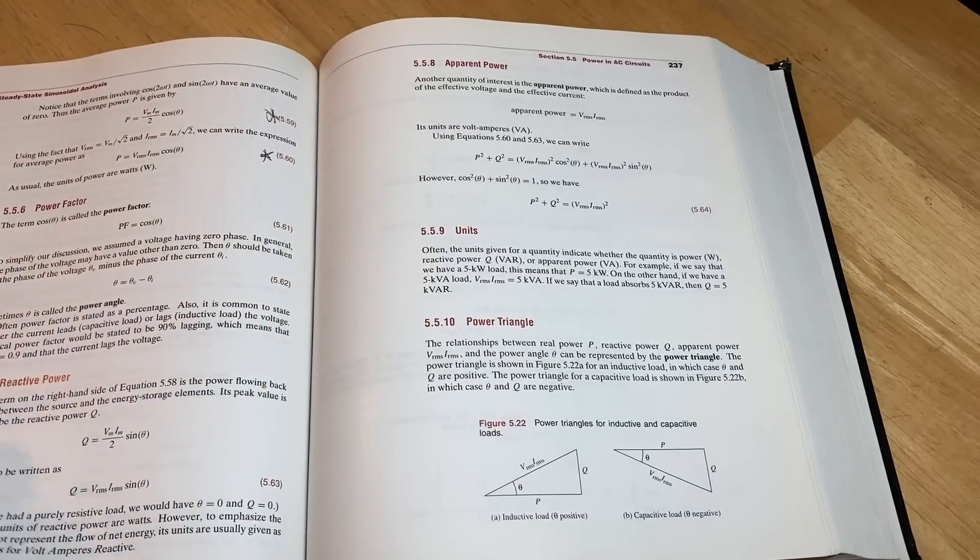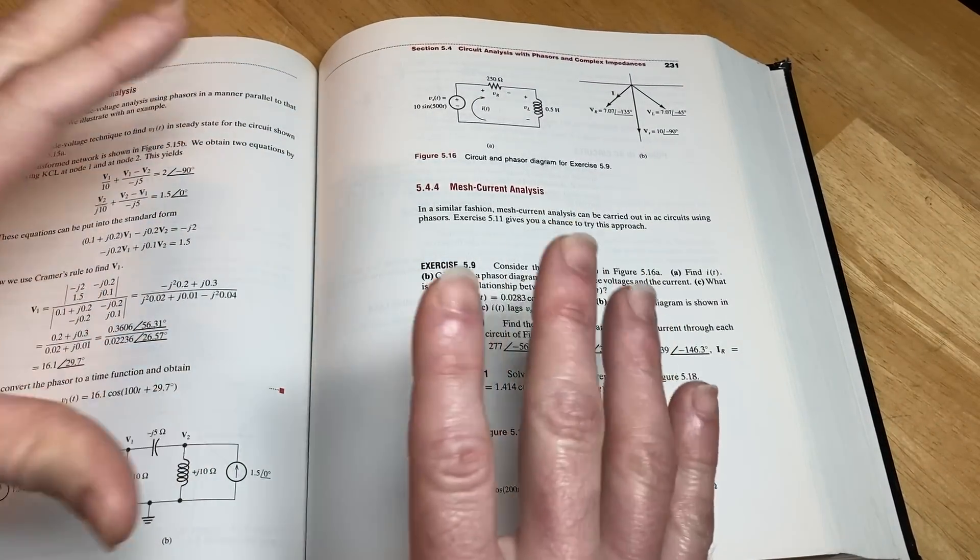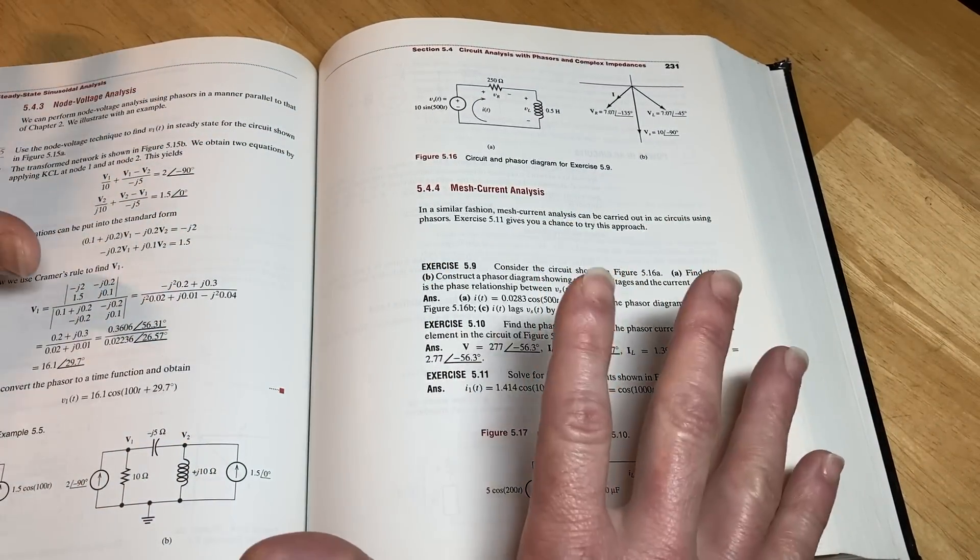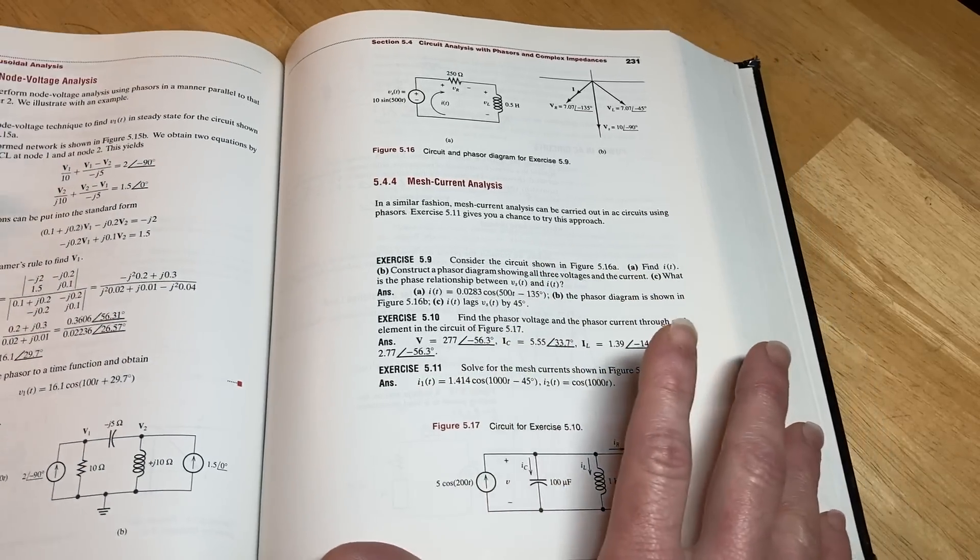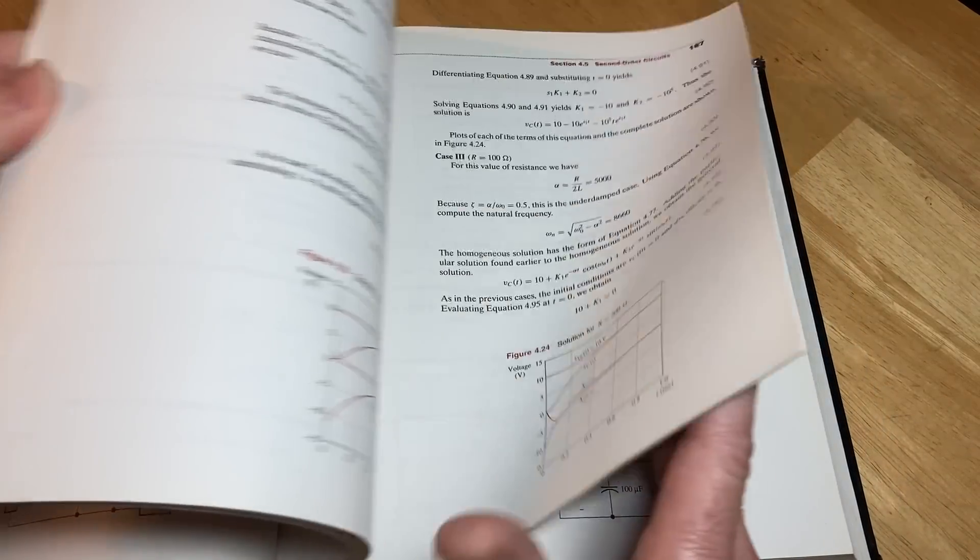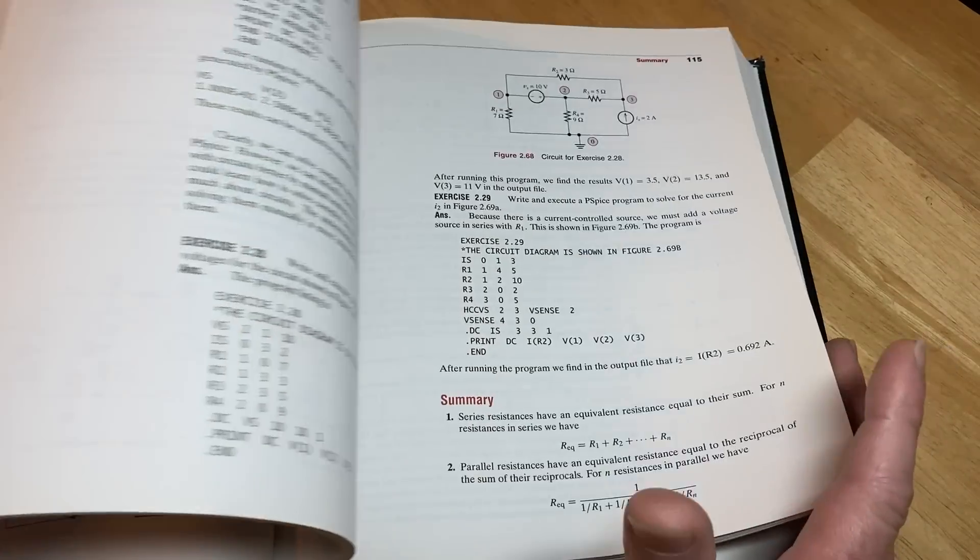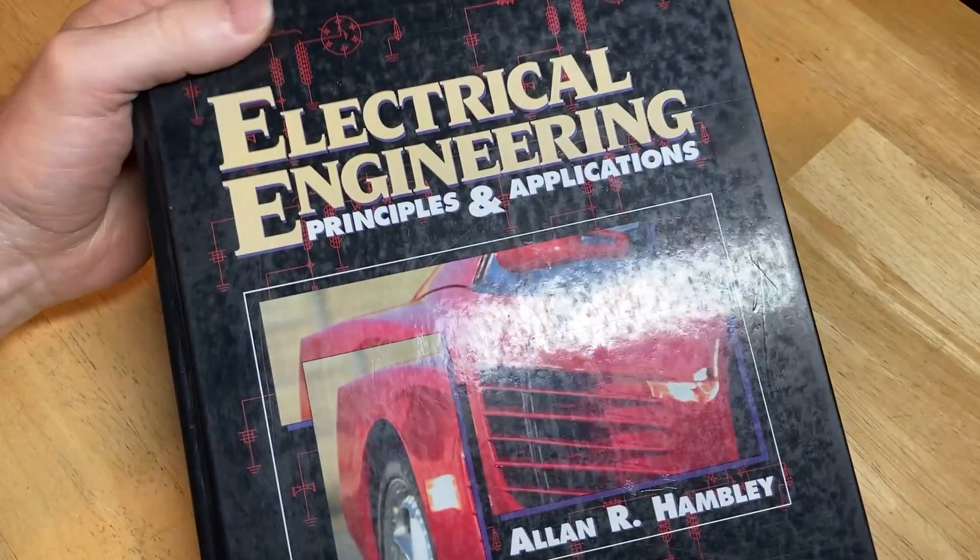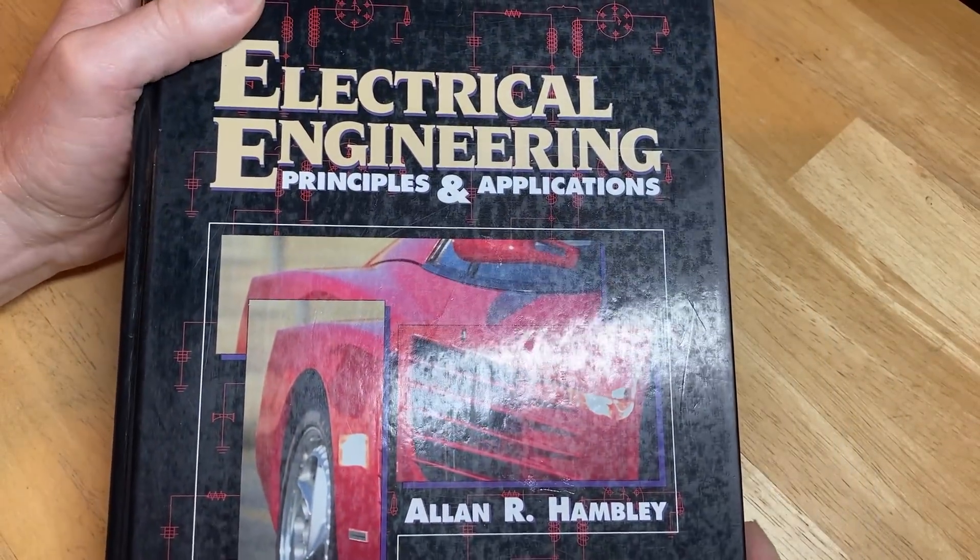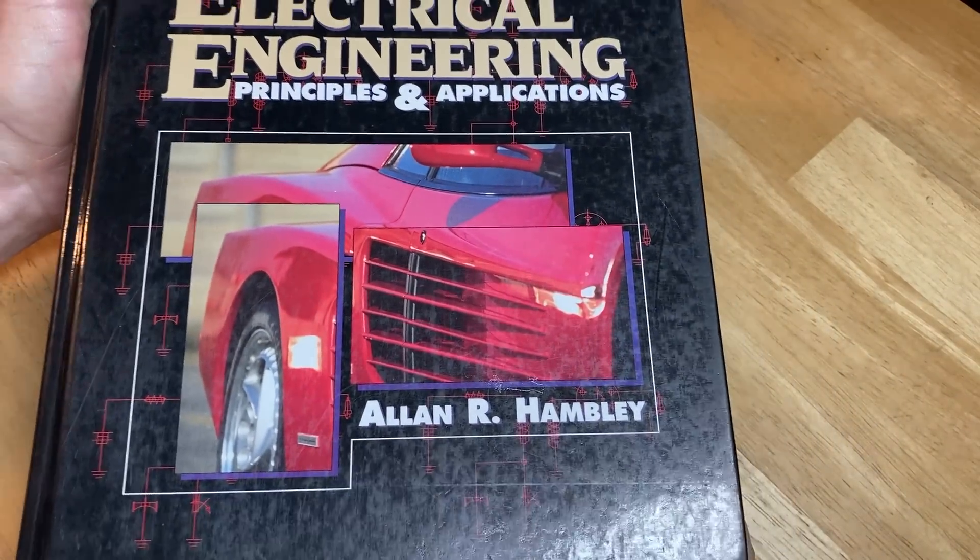In this video, I want to show you a book that you can use to learn the hardest major. This is a book you can buy. It's fairly inexpensive because you can get used copies. It has good reviews on the internet. It's a modern book, modern in its layout even though it's an older edition. The book is called Electrical Engineering Principles and Applications by Alan R. Hambly.